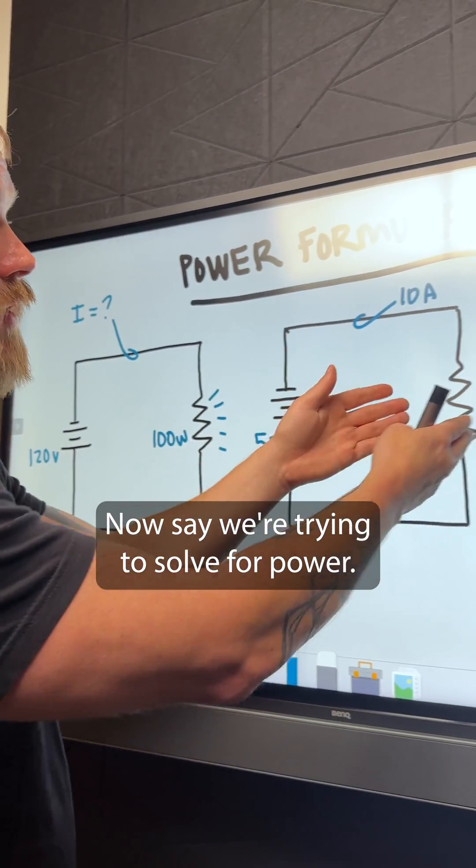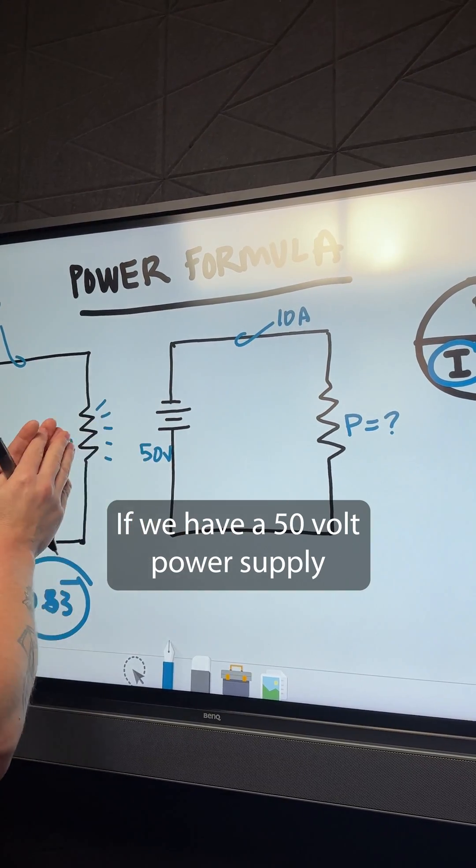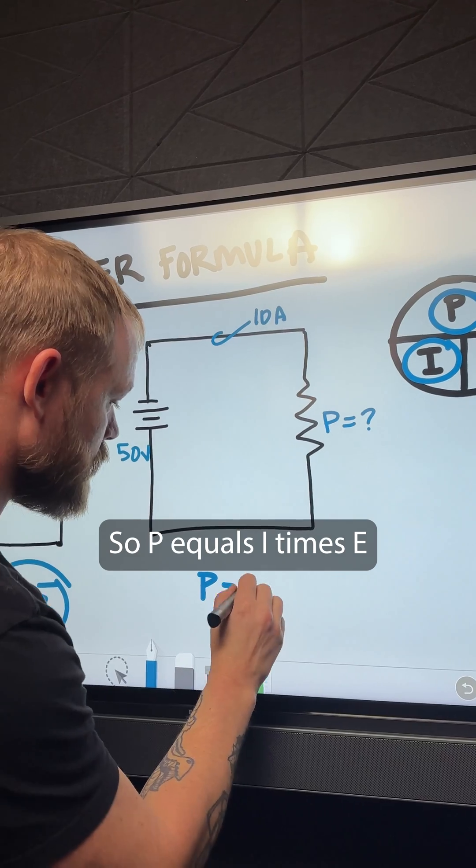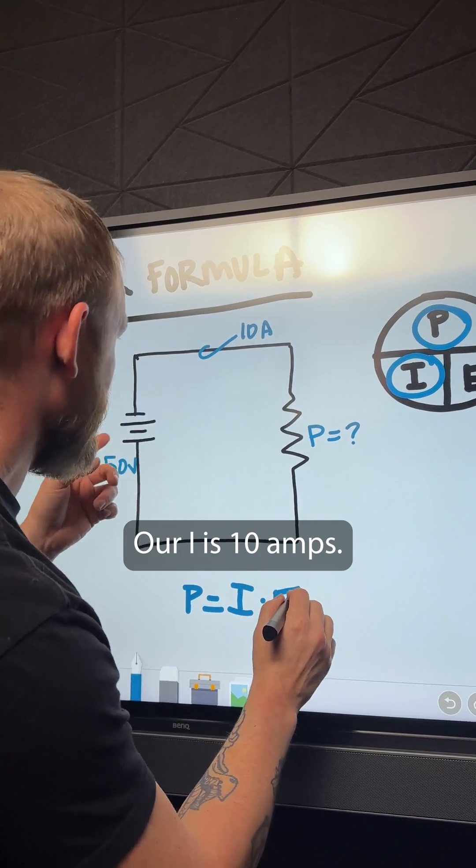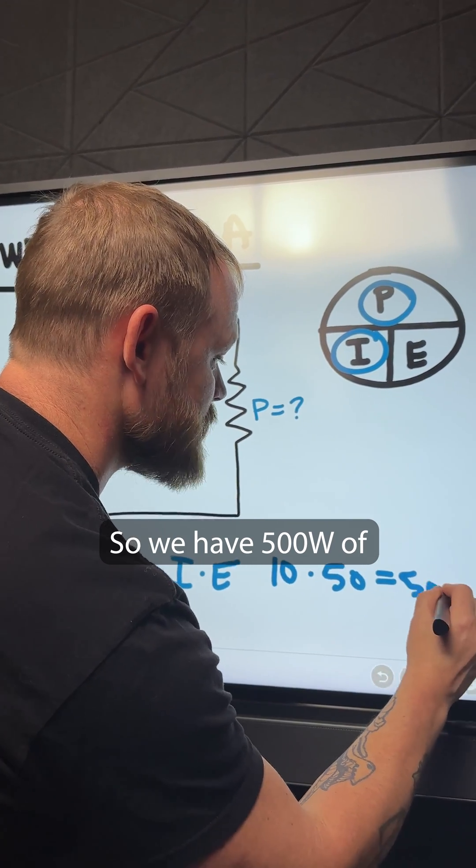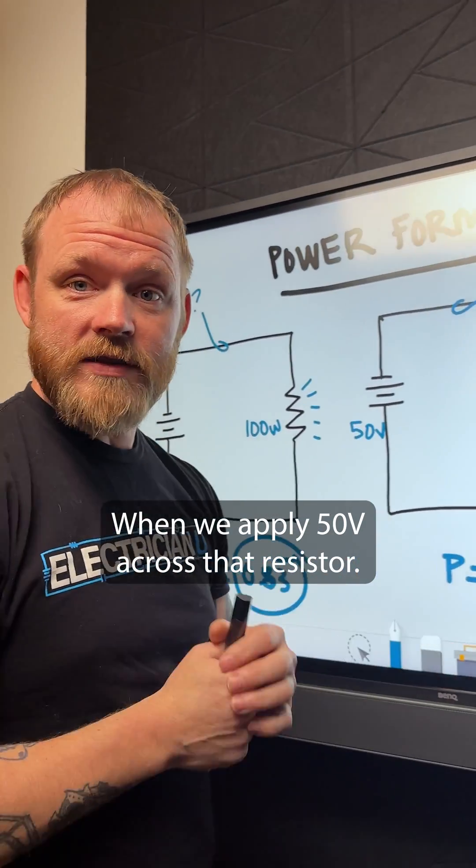Now say we're trying to solve for power. We're trying to see how much wattage is going to be transferred. If we have a 50 volt power supply, we know 10 amps of current is flowing through. So P equals I times E. Our I is 10 amps. Our E is 50. So we have 500 watts of energy being transferred when we apply 50 volts across that resistor.